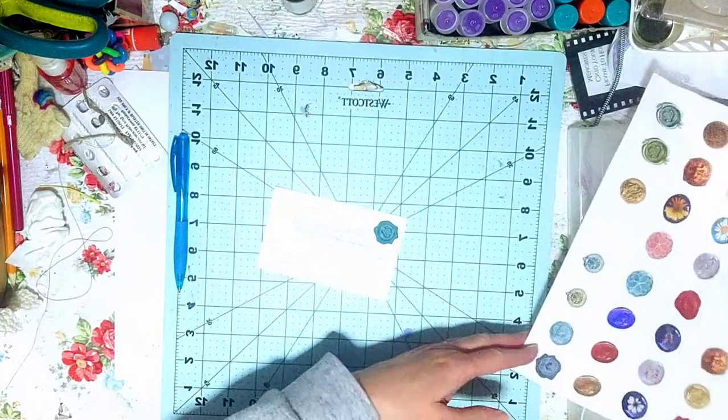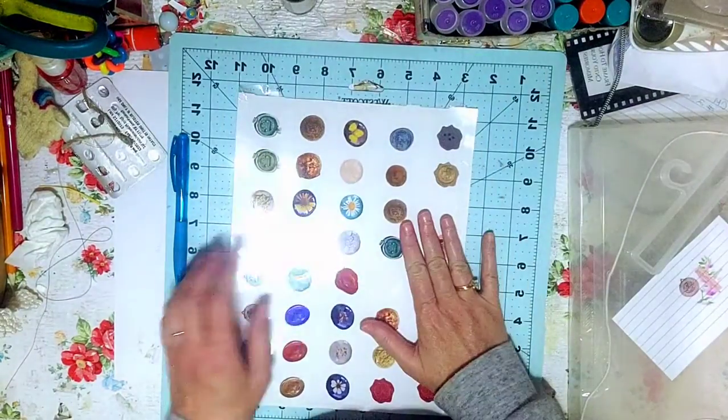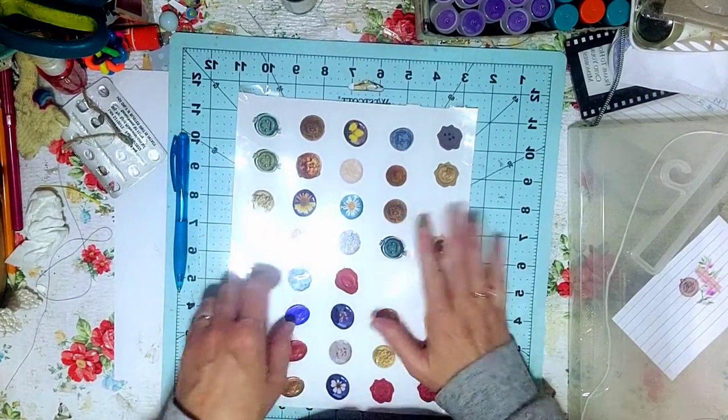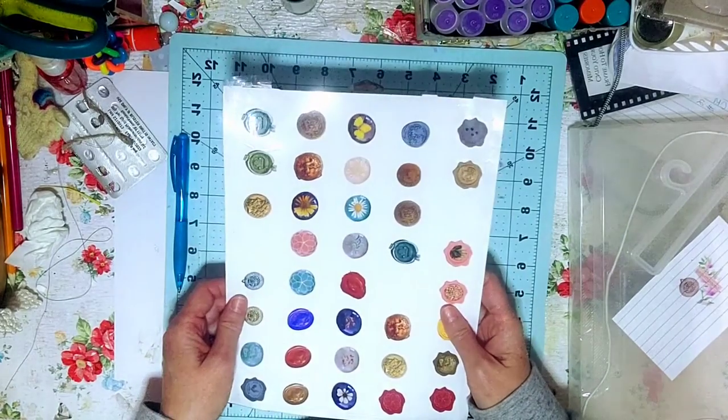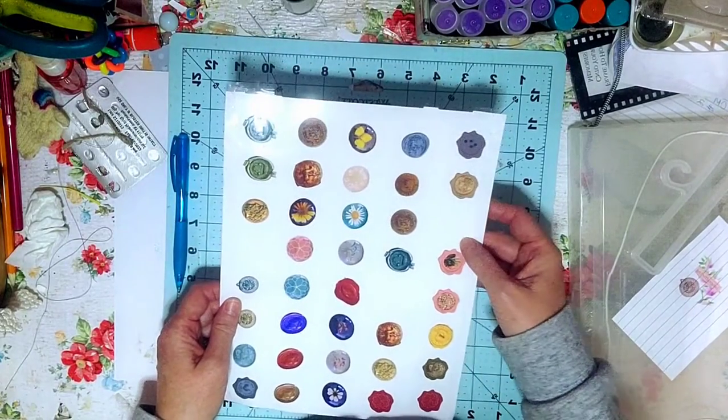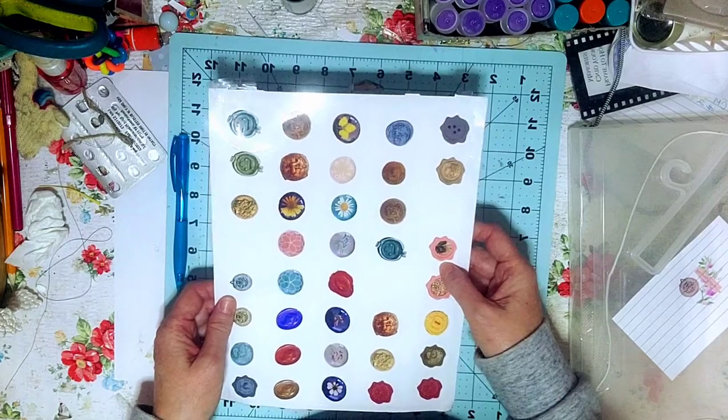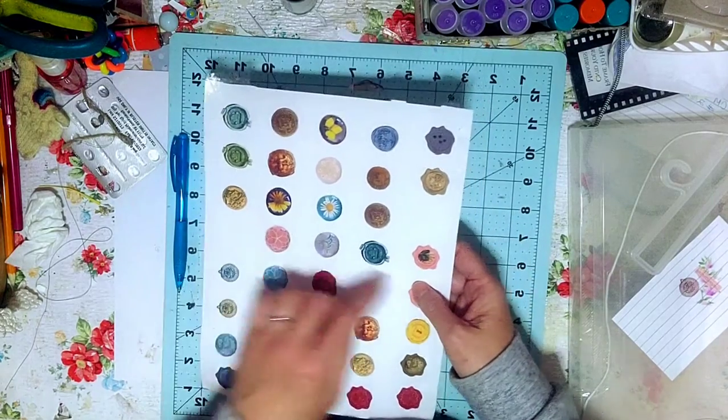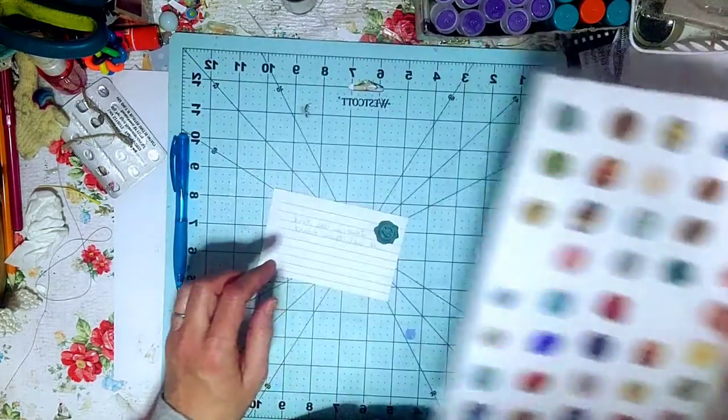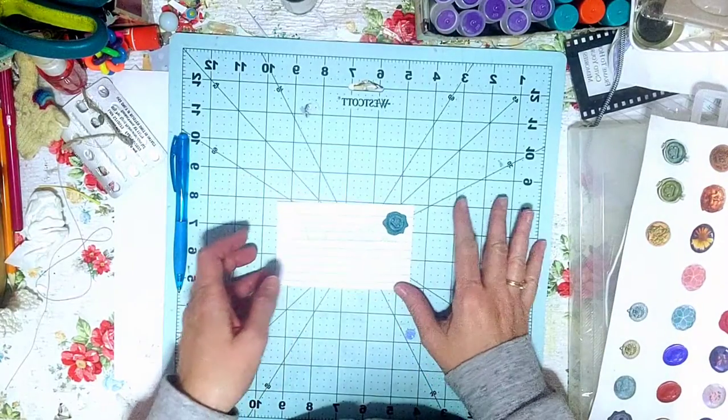Now, if you don't have sticker paper, you can just use your regular paper and just cut around them. And if you don't have a Brother Scan and Cut, then do the same thing, just cut around it. It'll work just as well.